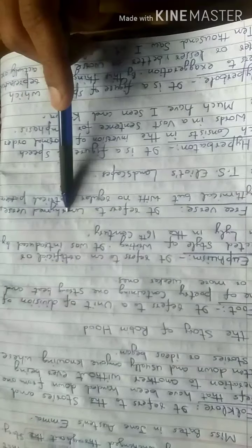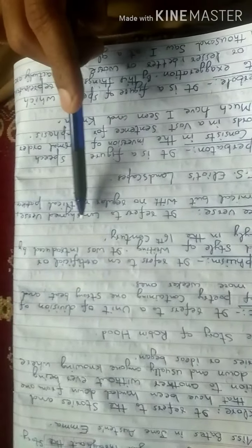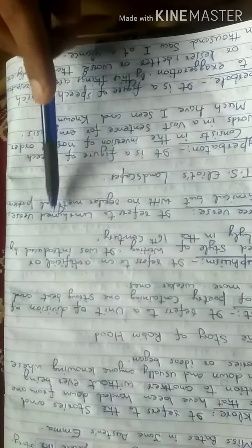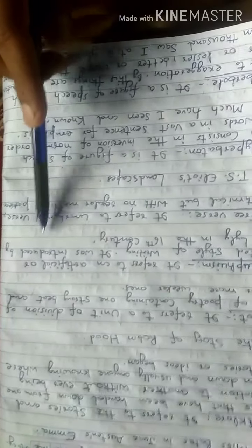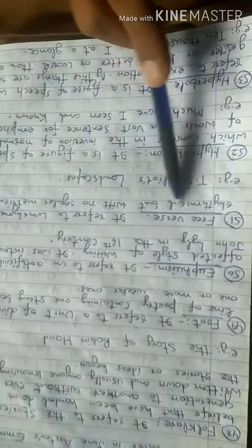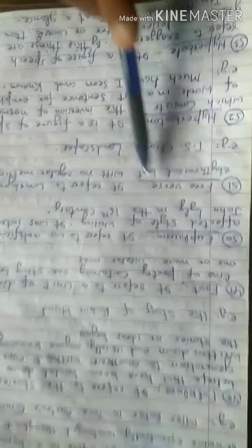In unrhymed verse, the last word in a line of poetry does not match with the word in the next line. It is rhythmical but with no regular metrical pattern. For example, T.S. Eliot's Landscapes is written in free verse.